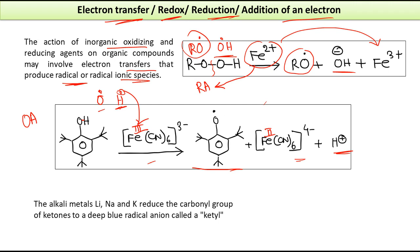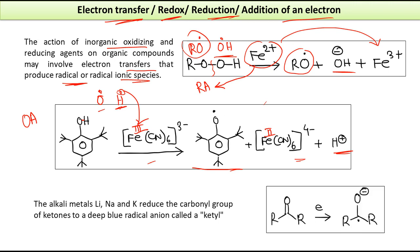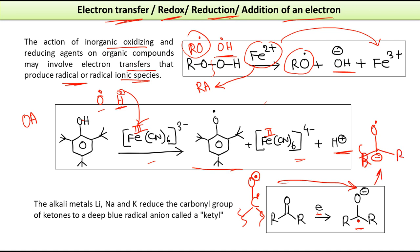Alkali metals such as lithium, sodium, and potassium can reduce the carbonyl group of ketones to produce a deep blue radical anion called a ketyl. Here, the C=O bond is considered: one electron goes to oxygen and carbon each. If the oxygen radical then accepts one more electron from the alkali metal, it becomes O⁻ while the carbon radical C• remains, producing a species with both a radical and a negative charge — the ketyl.